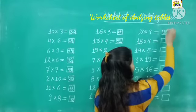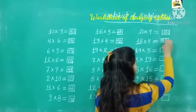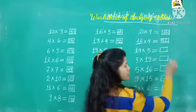Next is 18 fours are. Kya hoga? 72. 19 fives are. 95.